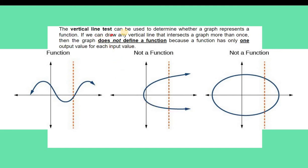The vertical line test can be used to determine whether a graph represents a function. If we can draw any vertical line that intersects a graph more than once, then the graph does not define a function, because a function has only one output value for each input value.